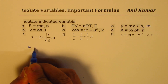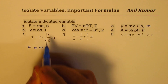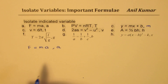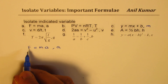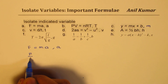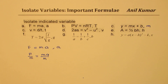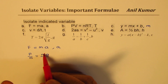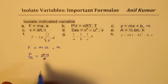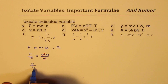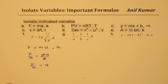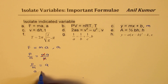We are given f equals to m times a. We need to isolate a, so that means we do not want m. We should divide by m on both the sides. m and m will cancel — m divided by m is 1 — and so we get f over m equals to a. Or we can write a equals to f over m.